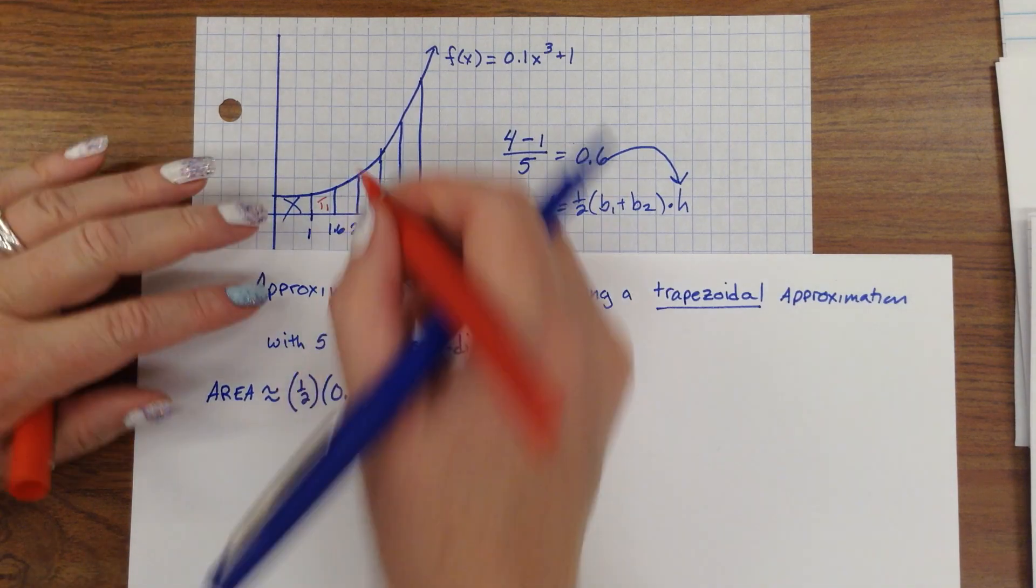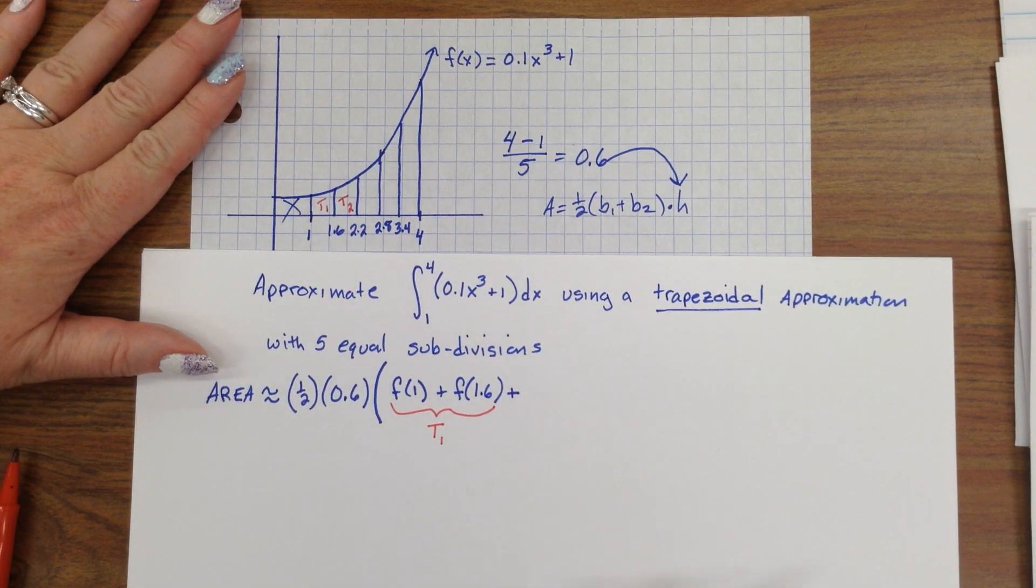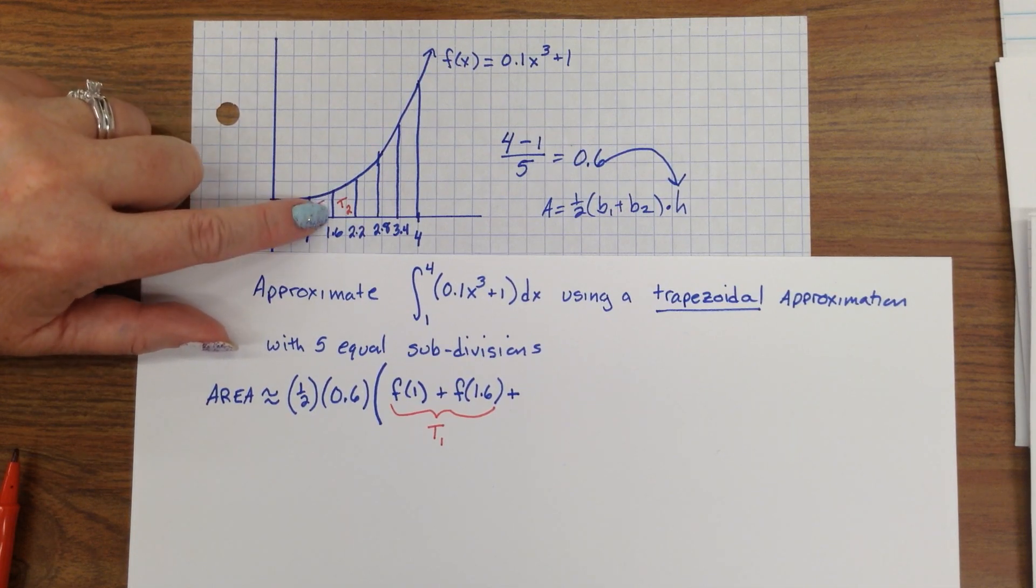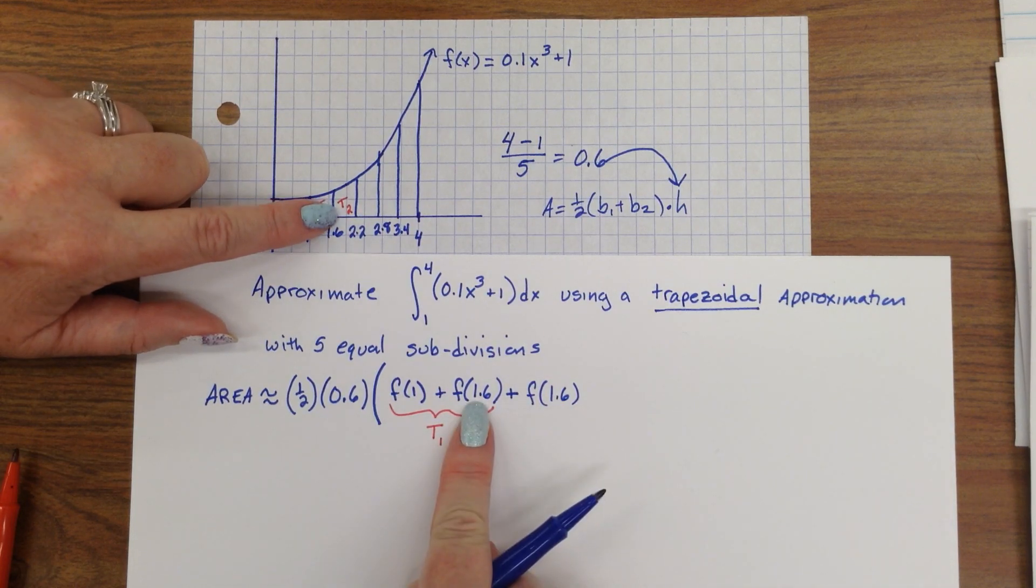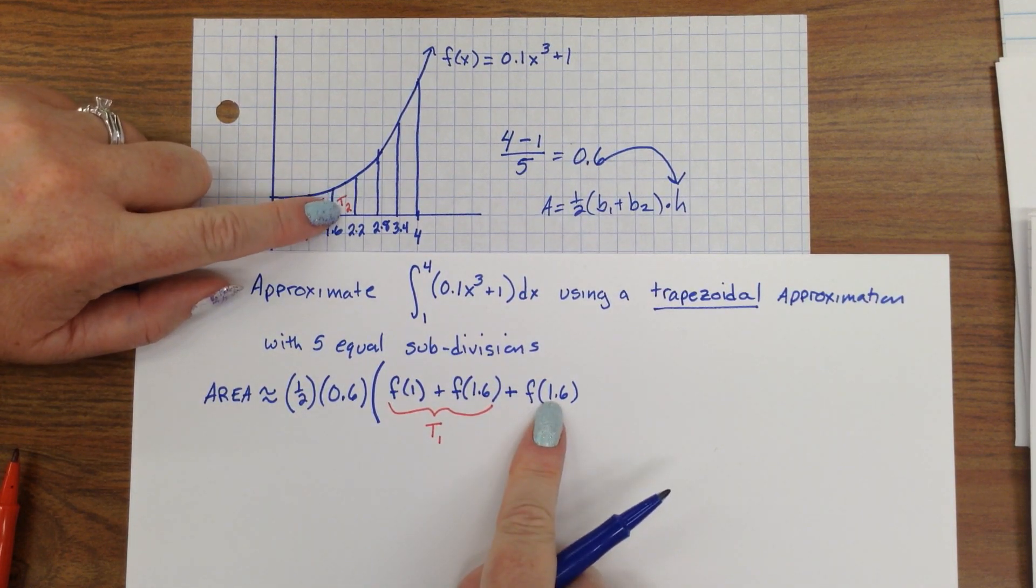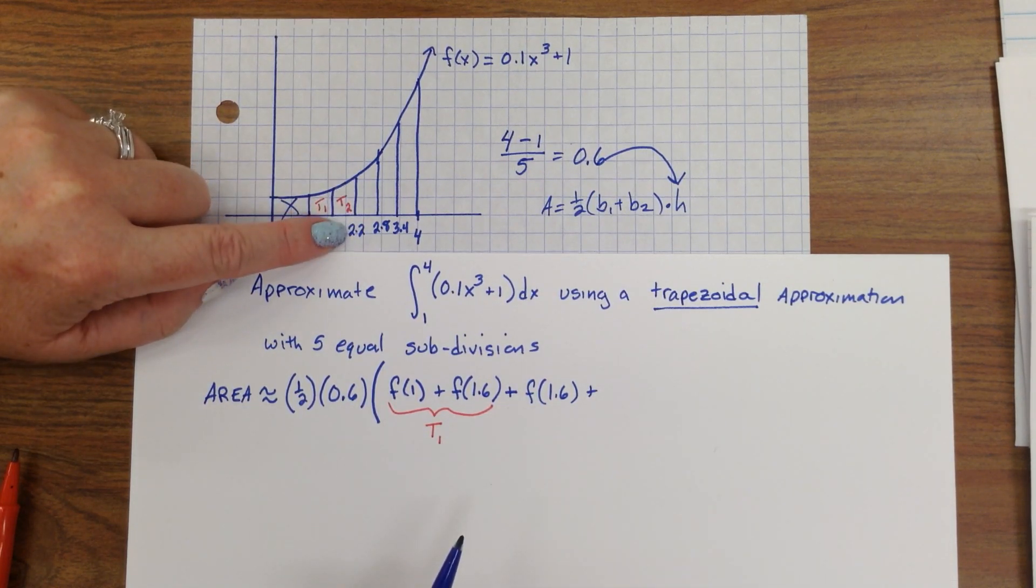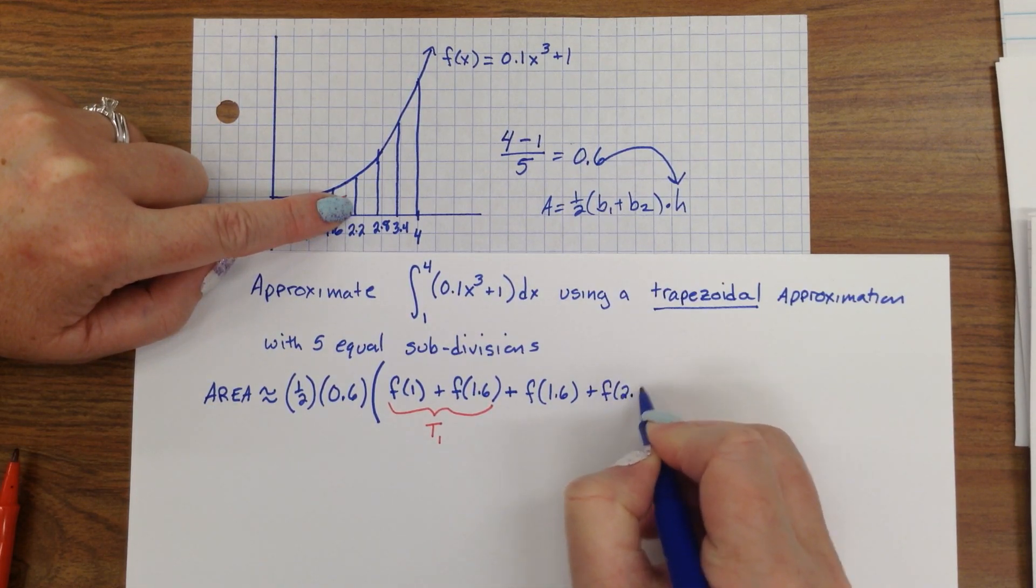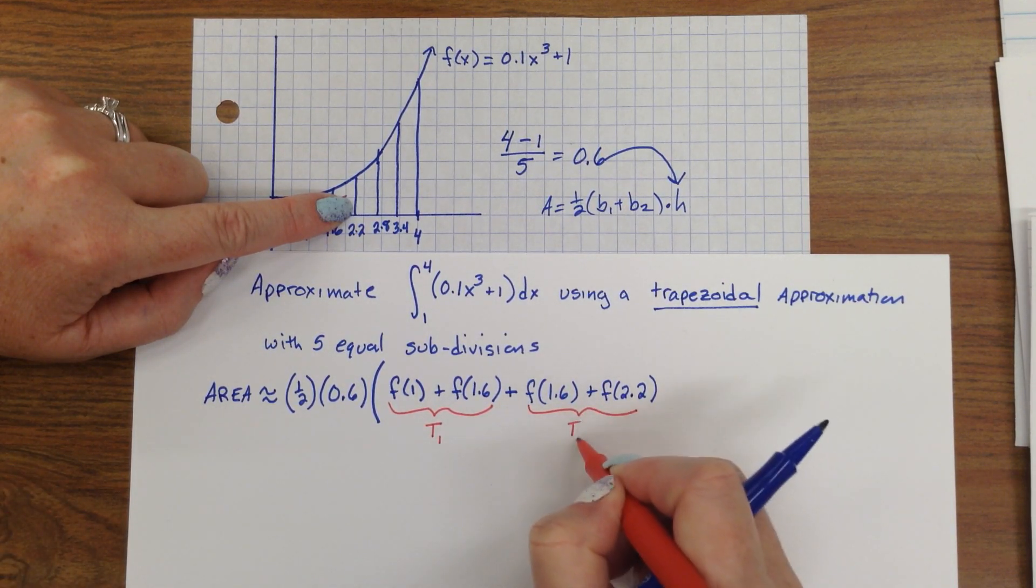But then there's another trapezoid. Trapezoid 2. I'm going to add these trapezoids up, so I put a plus. Base 1 plus base 2. On trapezoid 2, base 1 is the height at 1.6. So, you'll notice it's been used on the left side and the right side of 1.6. That's base 1 of trapezoid 2. Plus, base 2 is the height when the x-coordinate is 2.2. It is 2.2, 2.2, filled into the function. These are the bases of trapezoid 2.